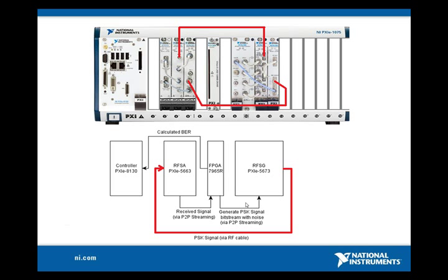The VSA will then downconvert the RF signal to a baseband signal. Then, the baseband signal will be transferred to the FlexRIO at the rate of 100 MB per second using NI peer-to-peer streaming technology.